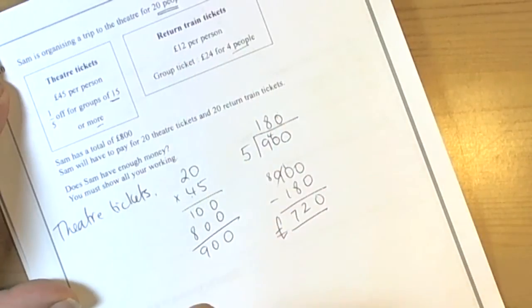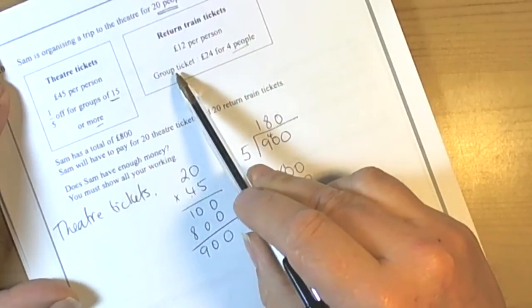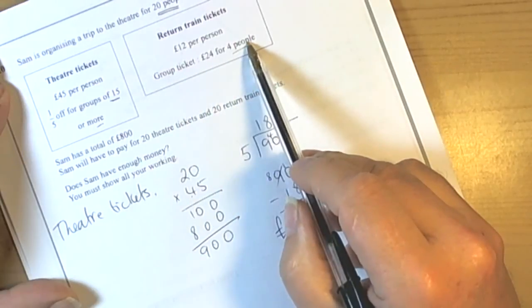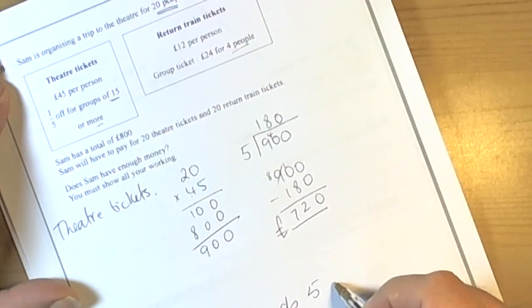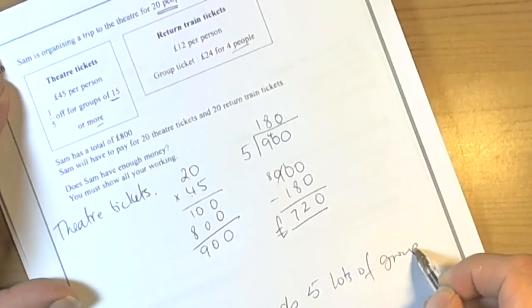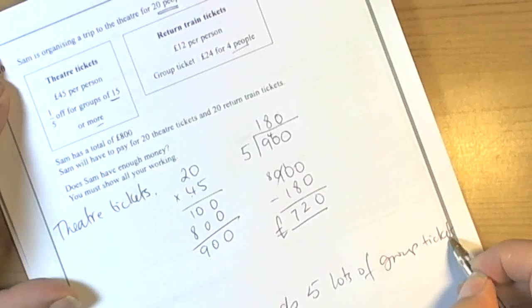When we look at the train tickets, we can see that it's 12 pounds per person, but it's a group ticket, 24 pounds for 4 people. Well he's got 20 people, so he needs 5 group tickets, so 5 lots of group tickets, 5 times 4 is 20, so 5 lots of group tickets.